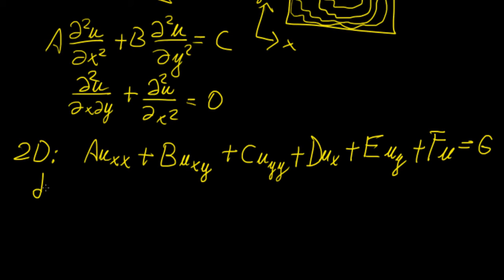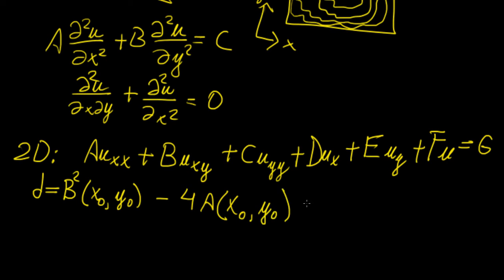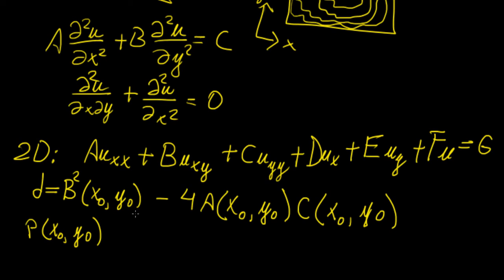We can classify this type of problem using something called the discriminant, defined as D = B(x0,y0)² - 4·A(x0,y0)·C(x0,y0), evaluated at a point of interest (x0, y0). We need to evaluate at a specific point because a PDE can be classified as one type within a certain domain but a different type in a different domain. It is a local concept, and the classification depends on the discriminant at each single point in the problem space.